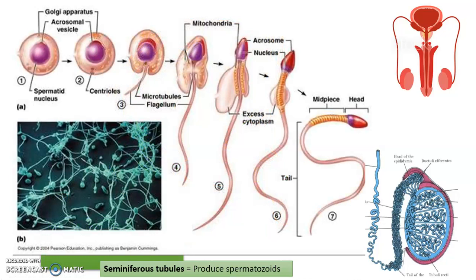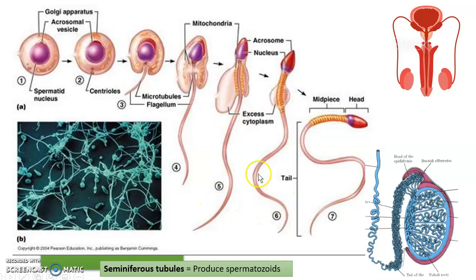When the sperms are formed, they have a circular shape and are not capable of fertilizing an egg. They need to acquire the full shape of a spermatozoid — developing a tail called a flagellum and having mitochondria in the middle piece to provide the energy to move that flagellum. In the seminiferous tubules they are immature, and once they move upward to the epididymis, the cell shape is modified so they become completely mature and ready for fertilization.